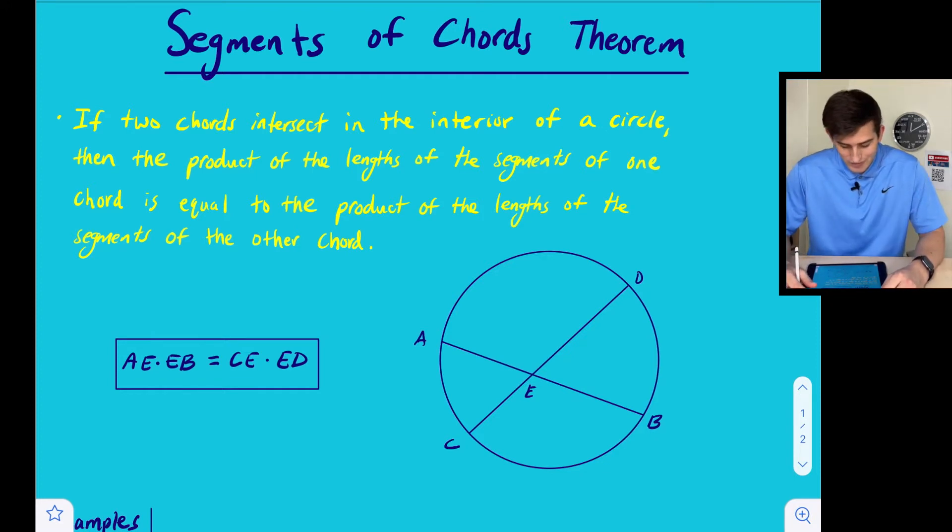It says if two chords intersect in the interior of a circle, then the product of the lengths of the segments of one chord is equal to the product of the lengths of the segments of the second chord.